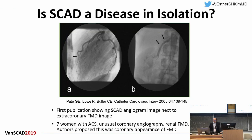In 2005, Dr. Peito and colleagues first published a report in a case series of seven women presenting with ACS who had unusual coronary angiography findings, and also had FMD. This was the first publication showing the SCAD image next to the extra-coronary FMD image. Other presenters proposed this was the coronary appearance of FMD.